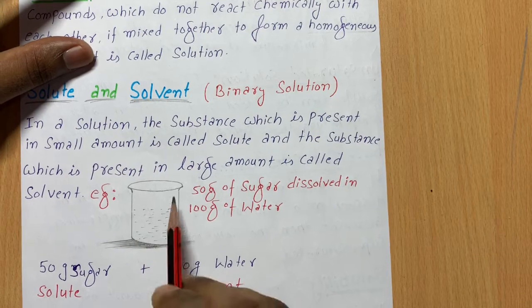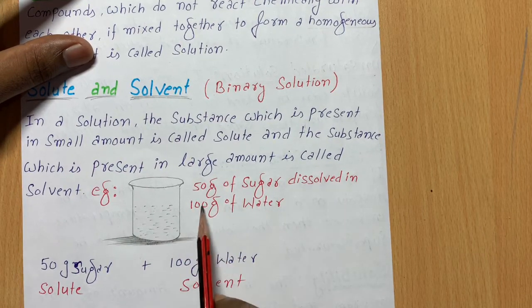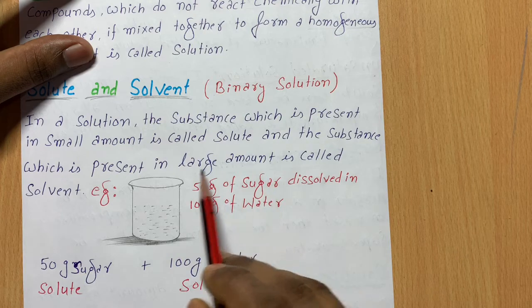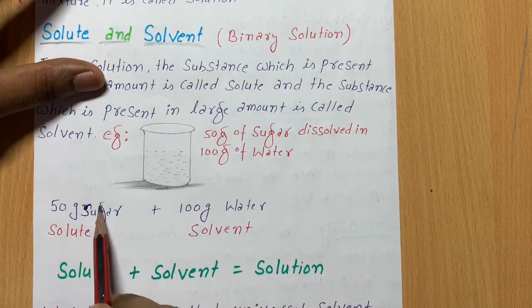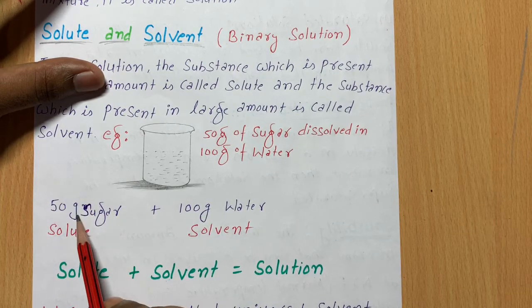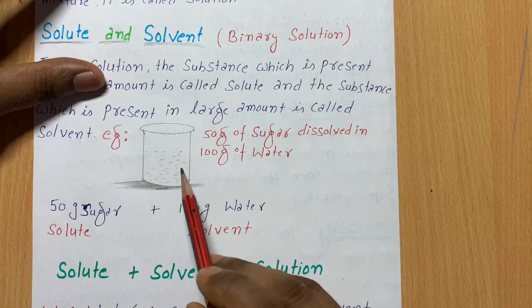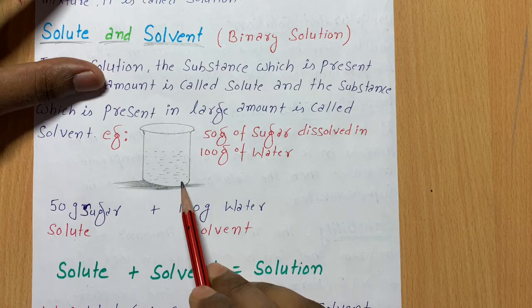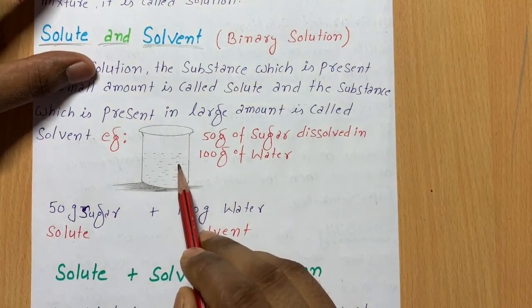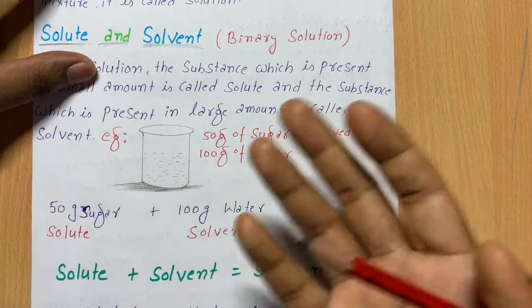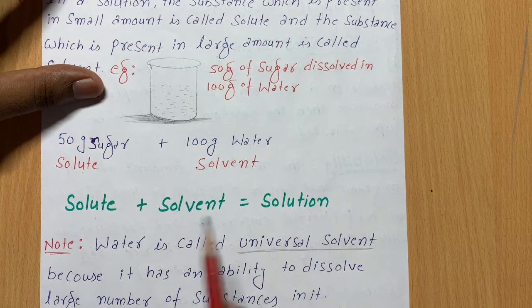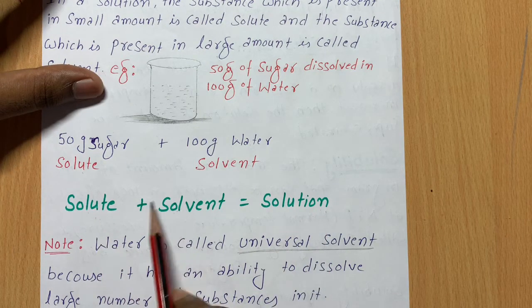For example, if you have 100 grams of water and dissolve 50 grams of sugar, then sugar is the solute because its quantity is less, and water is the solvent because it is present in greater amount. However, if both substances are equal in quantity — say 50 grams each — then either can be designated as solute or solvent.